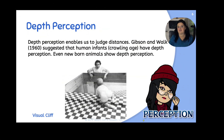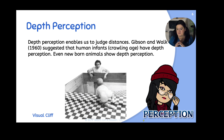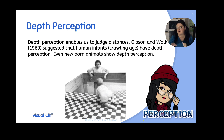Then we have depth perception. Depth perception enables us to judge distances. Gibson and Walk in 1960 suggested that human infants of crawling age have depth perception, and they put a baby on a glass surface to show that even newborn animals show depth perception and know not to go over a cliff — that they could fall. We know that there's glass there, but the baby doesn't understand glass, so the baby is going to stop at that ledge.